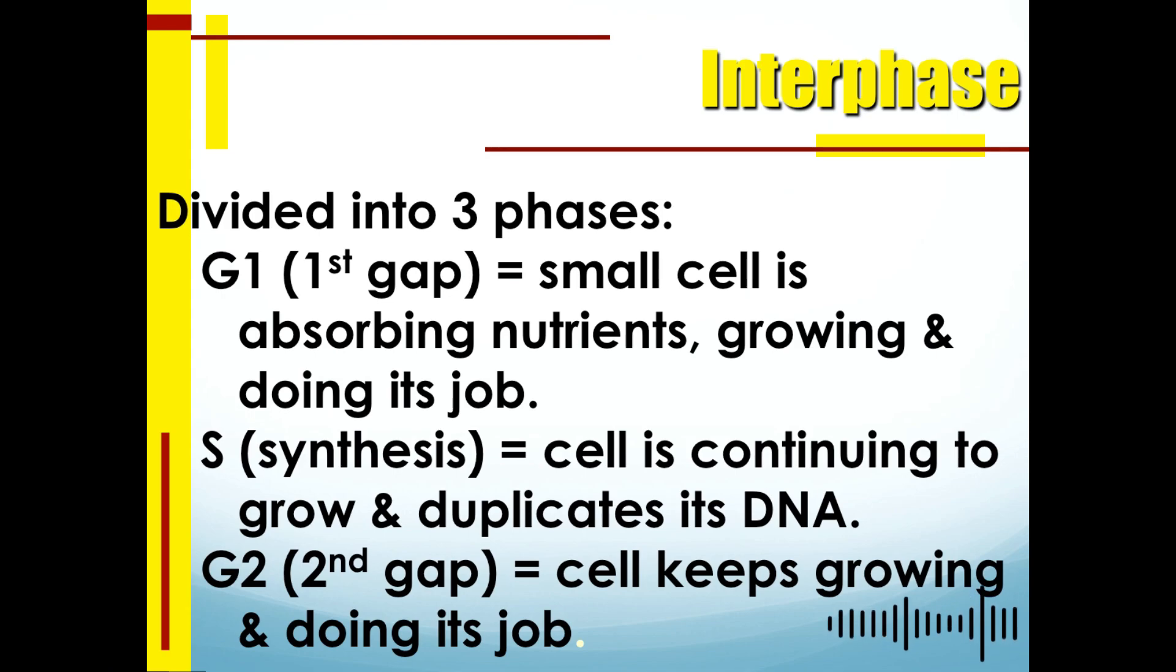The small cell is absorbing nutrients, growing, and doing its job. For S, which stands for synthesis, the cell continues to grow and duplicates its DNA. During gap two or G2, the cell keeps growing and doing its job.